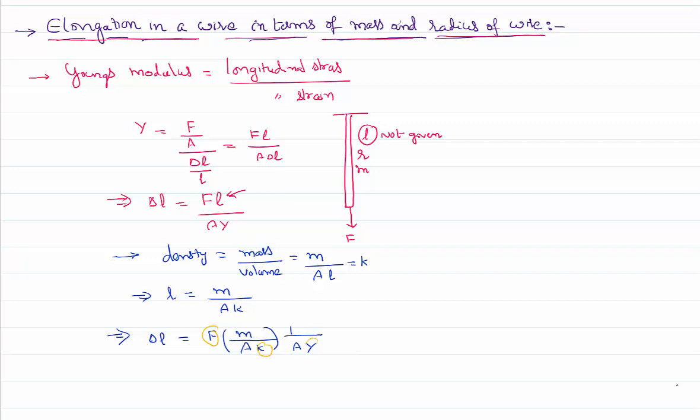we can write delta l is directly proportional to mass, inversely proportional to area square. Directly proportional to mass. Assuming area of cross section is circular, I can write area as pi r square, and whole square. Then I can write delta l is directly proportional to m by r power 4. So if I have taken a wire whose mass is known for you and the radius of the wire is known for you, I can use this relation. If suppose somebody says I have taken two wires...